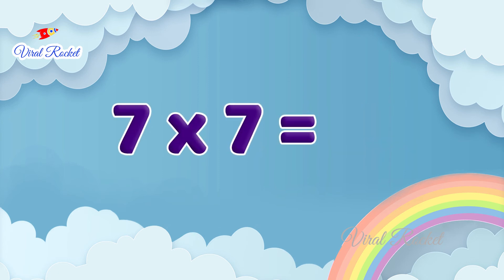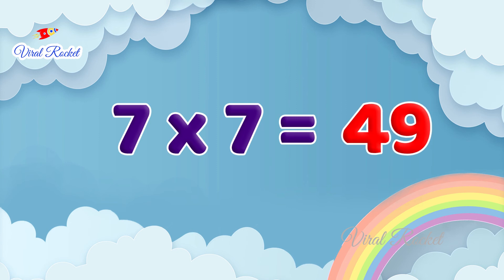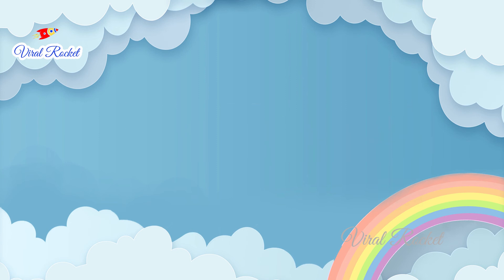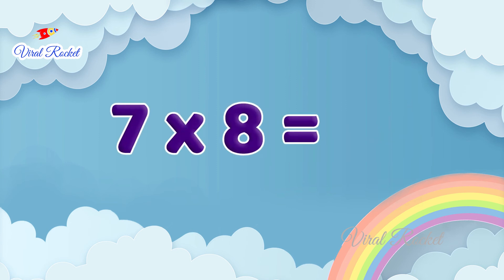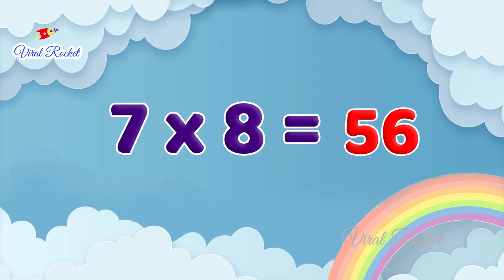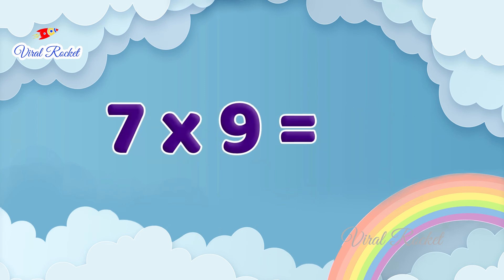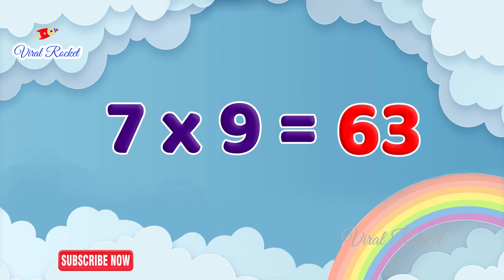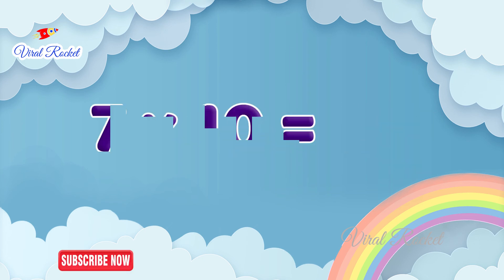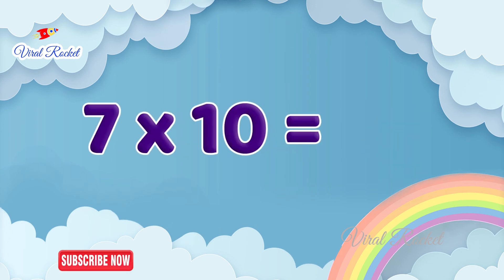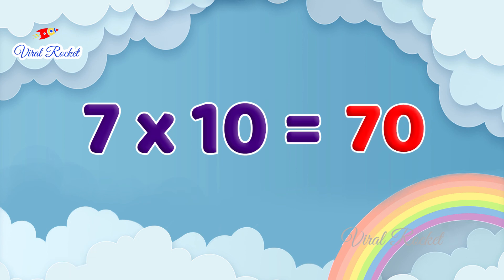Seven sevens are forty-nine. Seven eights are fifty-six. Seven nines are sixty-three. Seven tens are seventy.